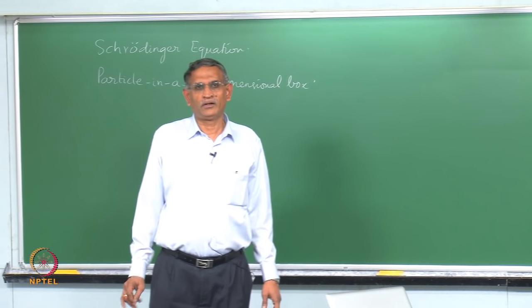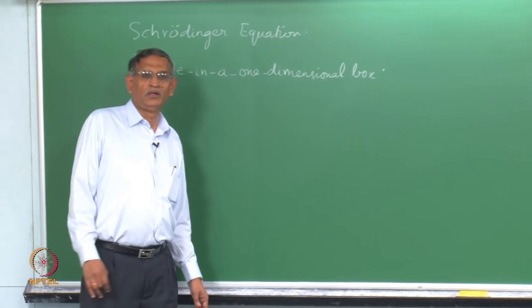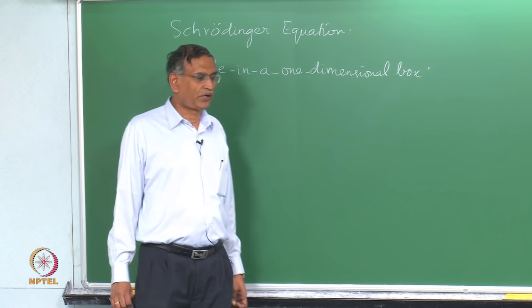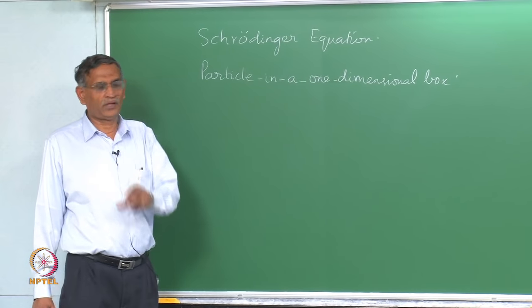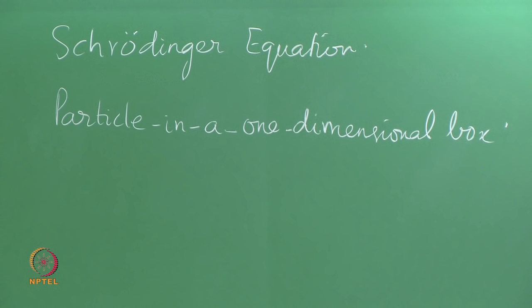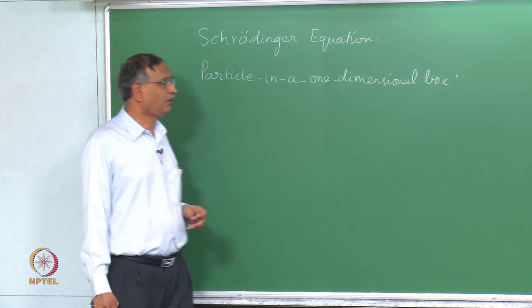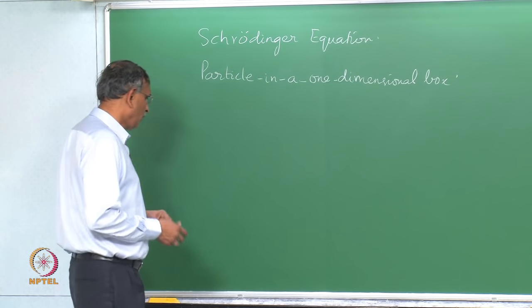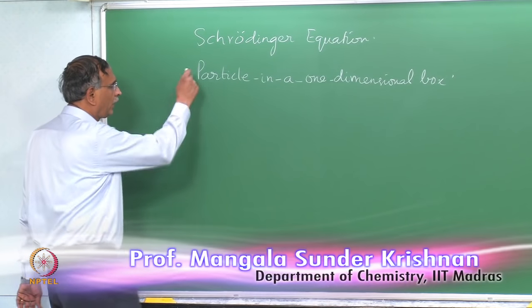Welcome back to the lecture for introductory chemistry using Schrödinger and quantum mechanical methods for atomic structure. In this and the next segment we will introduce the Schrödinger equation and also do a model problem using the particle in a one-dimensional box model. This is one of the simplest models that we have. Let us take a quick look at the Schrödinger equation.